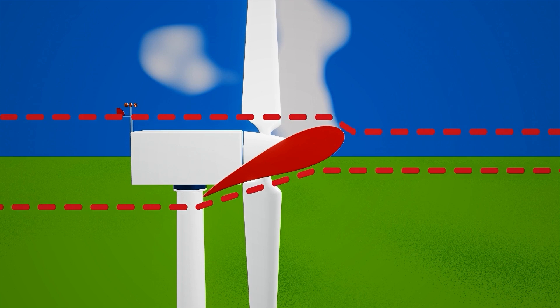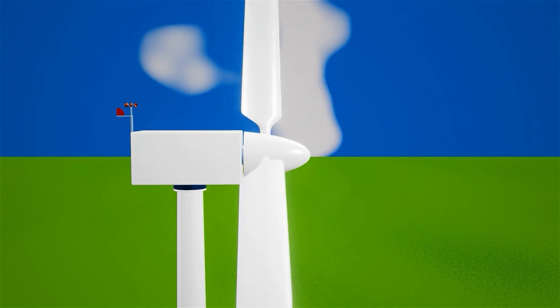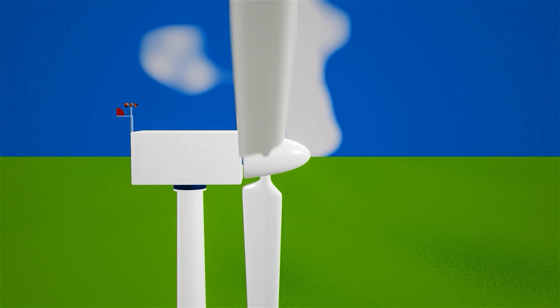Conversely, the air passing over the blade faces less resistance from the airfoil shape, resulting in an increase in speed and a decrease in pressure. This variance in pressure creates lift, much like an aeroplane wing. The air beneath the blades rises, generating a force that sets the blades in motion.